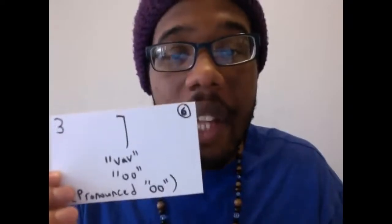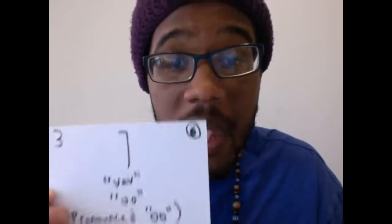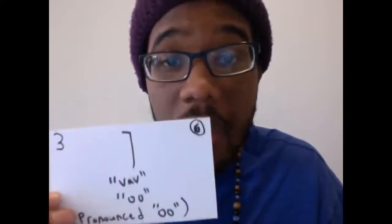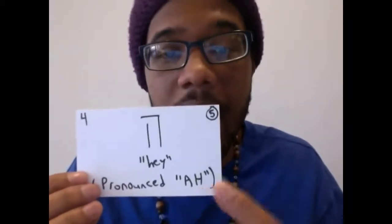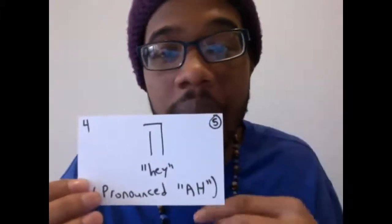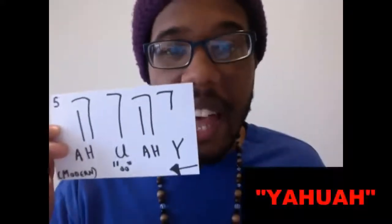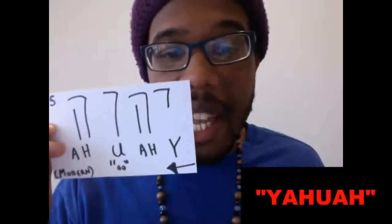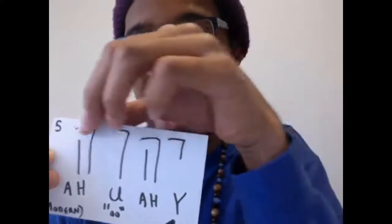We know for a fact that this letter is pronounced 'ooh' — the double-U sound. And then the fourth and final letter is the Hey once again, pronounced 'ah,' the same as the second letter. So when you put it all together — Y, ah, ooh, ah — you get Yahuwah.